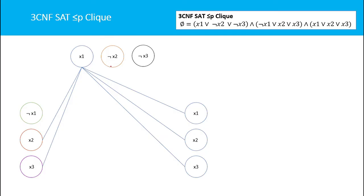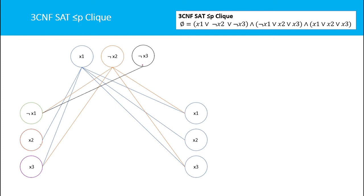I also will not draw edges between literals within the same clause. From ¬x2 I can draw to ¬x1 — there is no issue — but I cannot draw an edge from ¬x2 to x2. I will draw an edge from ¬x2 to x3. Similarly, from ¬x3 I will add edges to ¬x1 and x2, but not to x3 since those are negations.